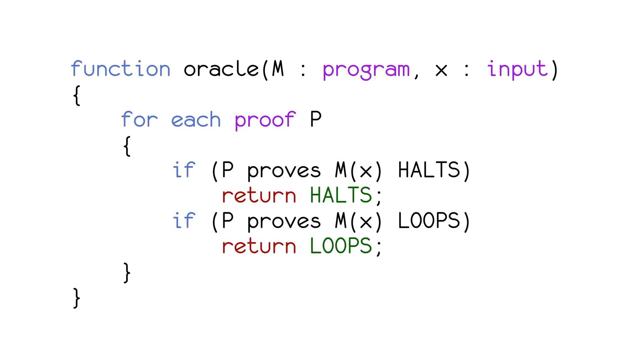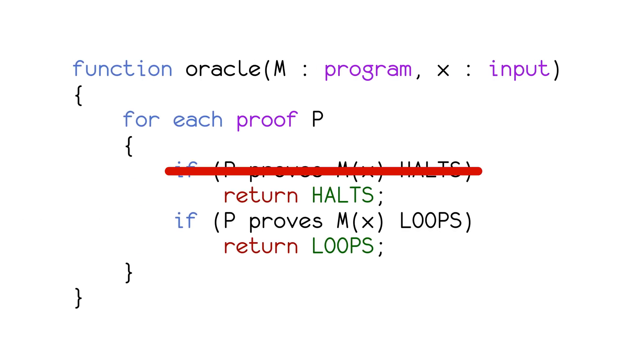Since the program we wrote never finds this proof, M on X cannot halt. We have an M that doesn't have a proof that it halts or loops, which means that it must loop, but we can never prove it.